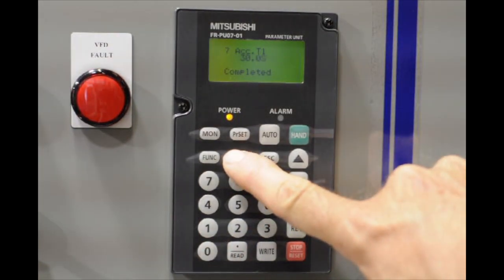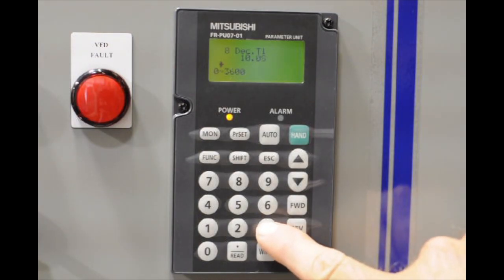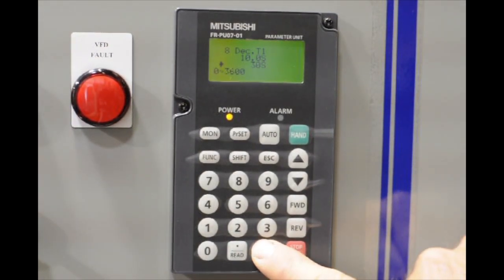Again, it blinks. We're going to move on to parameter eight, which is the decel time, and this one is set up for 10 seconds, and we're going to go ahead and put in 30 also. Three zero, and hit write.